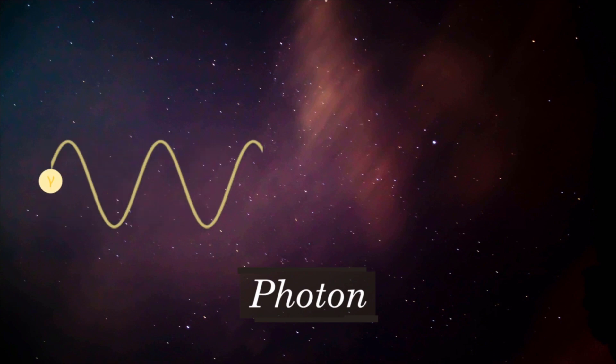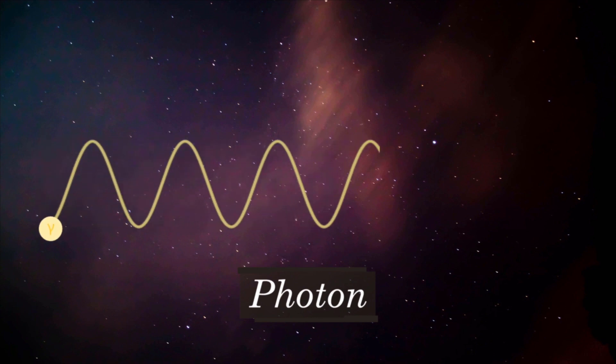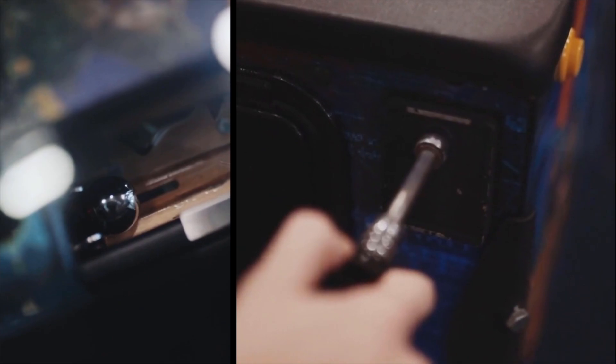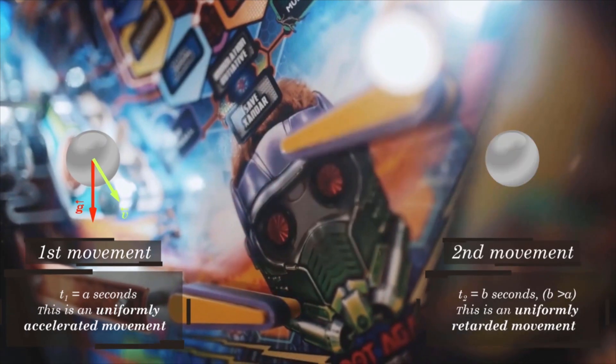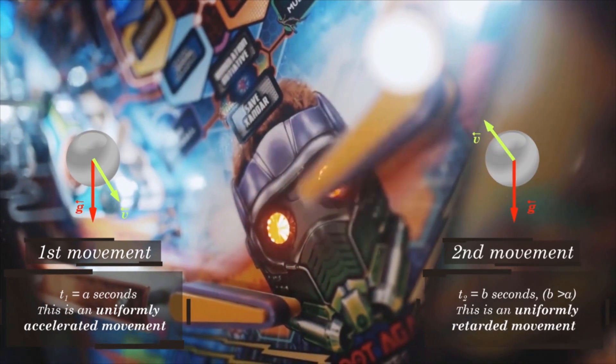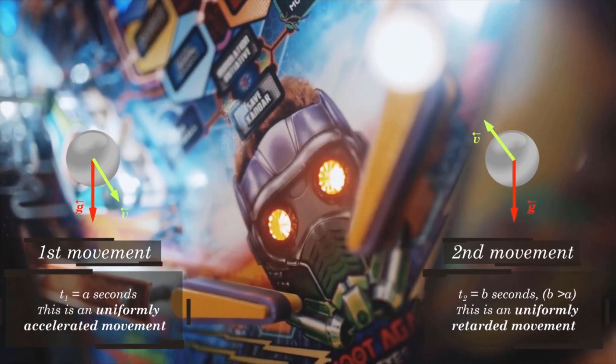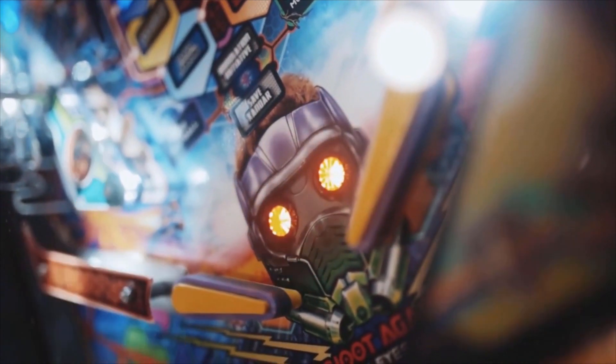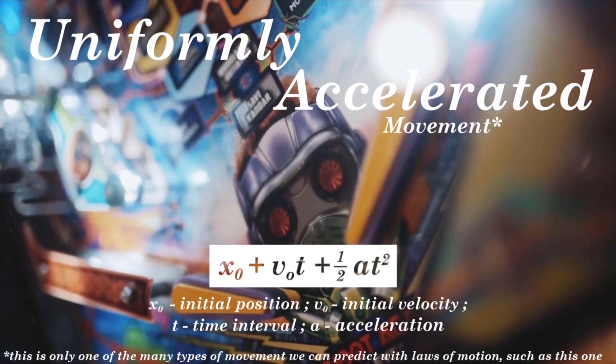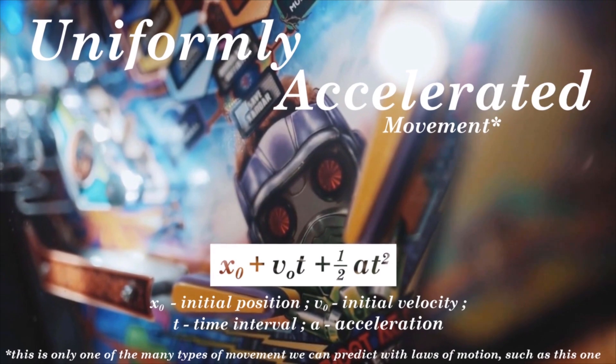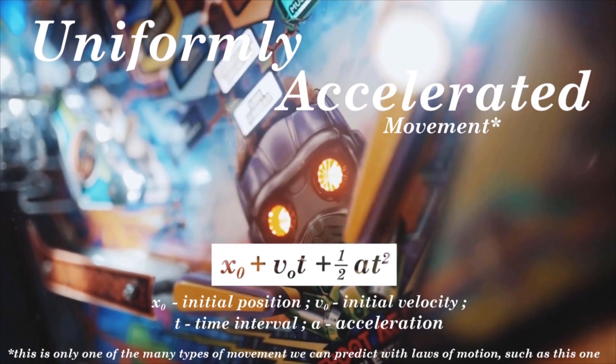Light waves are made up of elementary particles, which we call photons, which are objects whose trajectory Newtonian physics would allow us to predict — simply as we predict this ball's motion.